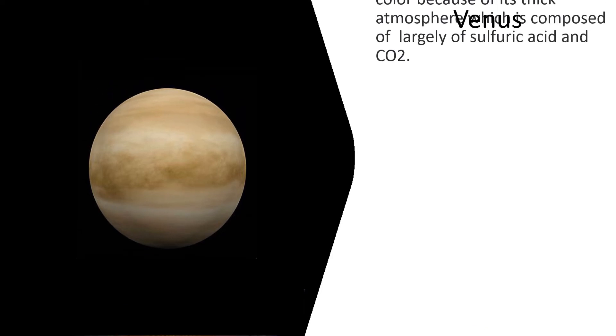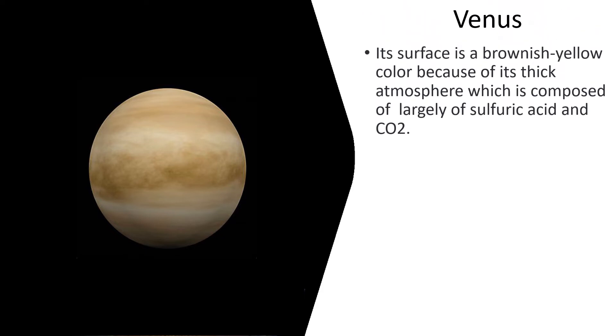Venus. Its surface is a brownish yellow color because of its thick atmosphere, which is composed largely of sulfuric acid and CO2. Its size is a little over 12,000 kilometers or 7,300 miles in diameter. It rotates around the Sun in 243 days.